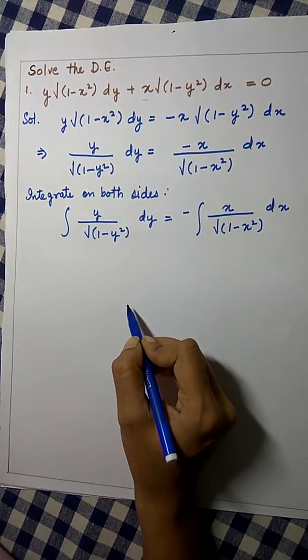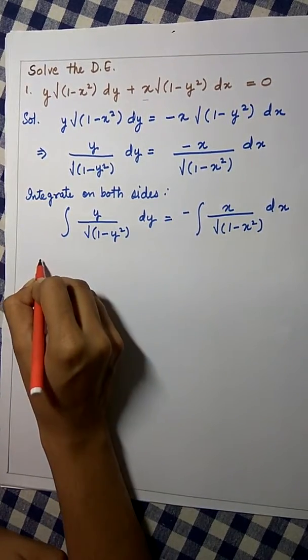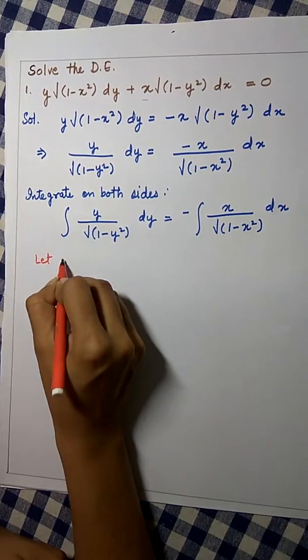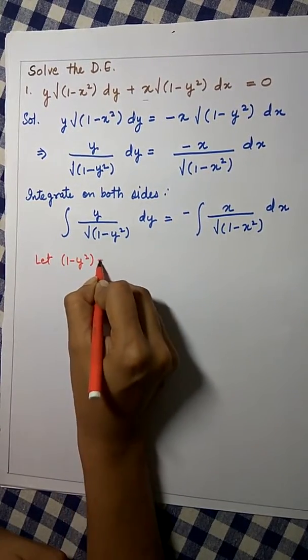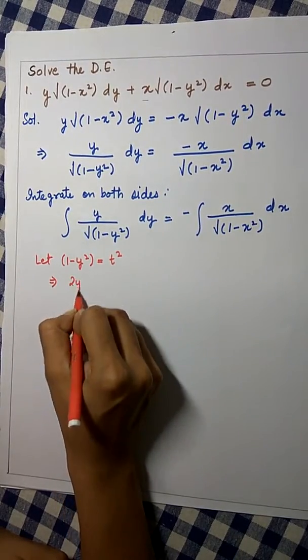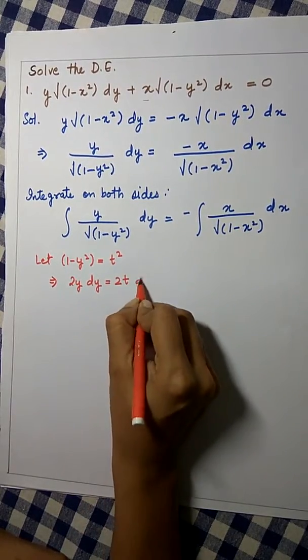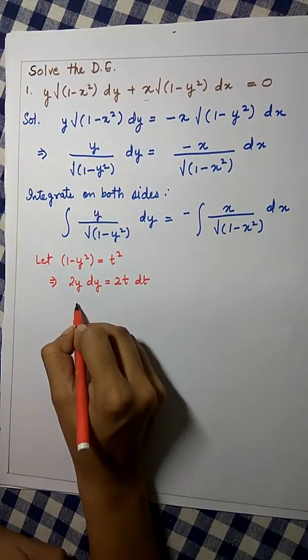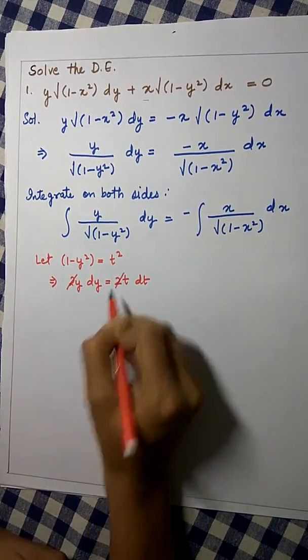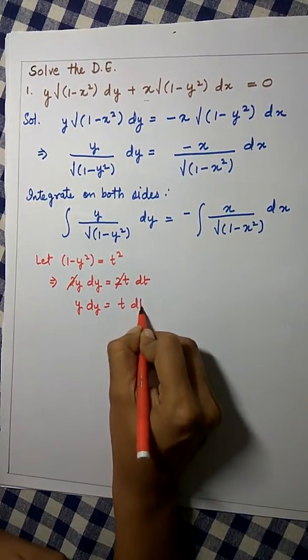Now, to integrate this, let us take 1 minus y square as t square. So, let 1 minus y square be equal to t square. This will give us negative 2y dy equals 2t dt. So, we can cancel 2 and 2 on both sides. This will give us y dy equals negative t dt.